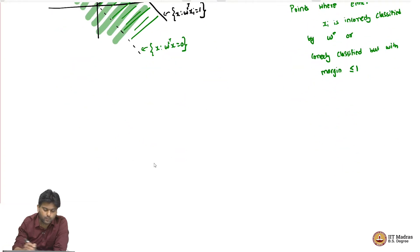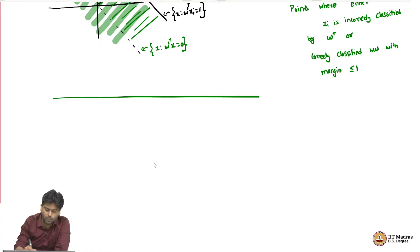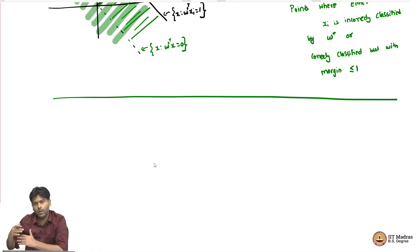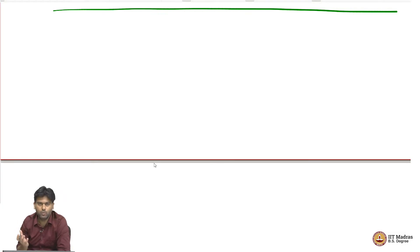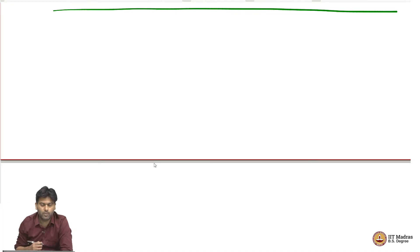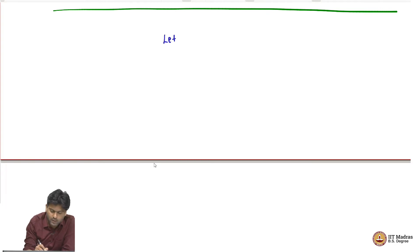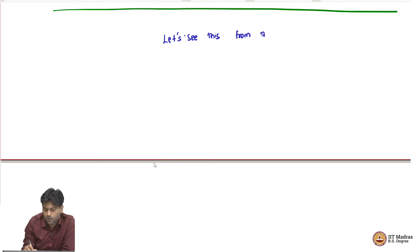The other way to look at this same question would be to start from the primal problem and see what we can argue. We will do that as well, and I will tell you why we are doing these two different things. When we summarize everything together, you will be able to appreciate that better. So let us see this from the primal point of view.